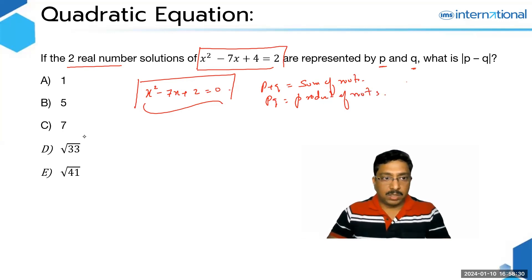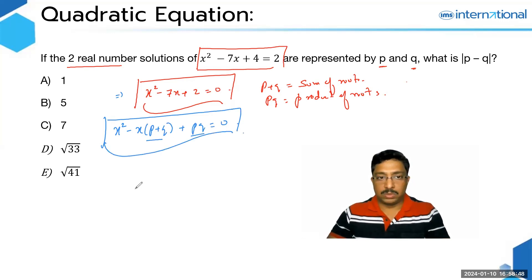Now, the given quadratic equation, we're going to compare it with x² - x(P + Q) + PQ = 0, which is a quadratic equation in terms of sum of roots and product of roots. So comparing this quadratic equation with this, we have P + Q = 7 and PQ = 2.